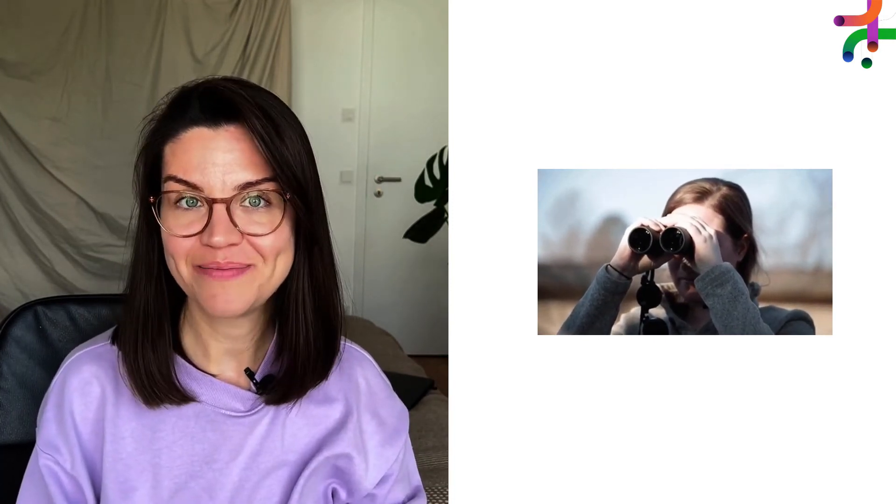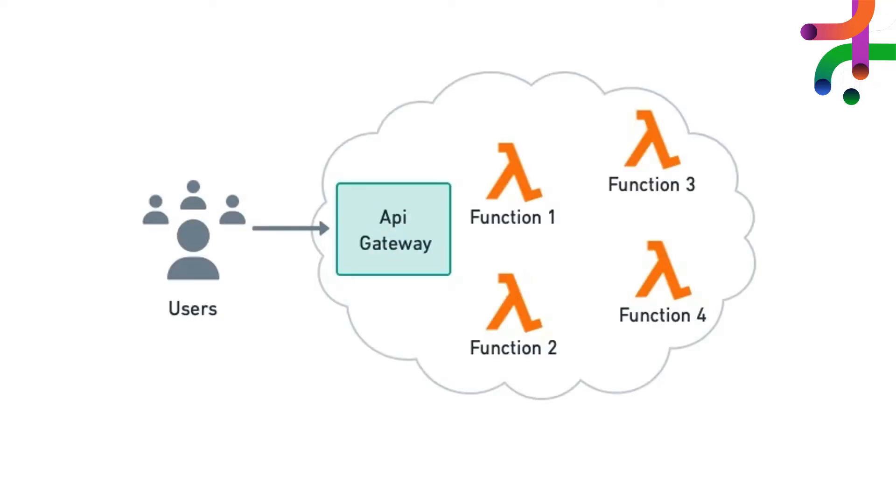However, before making the jump to Kubernetes, be aware that the biggest challenge for companies migrating to Kubernetes is finding skilled developers. So if that's you, the next option might be your best bet. Option number five: deploying microservices as serverless functions. Serverless functions deviate from everything else discussed so far — instead of servers, processes, or containers, we simply use the cloud to run code on demand. Serverless provides a hands-off solution for scalability. Compared with Kubernetes, it doesn't give you as much control, but it's easier to work with and you don't need any special skills.